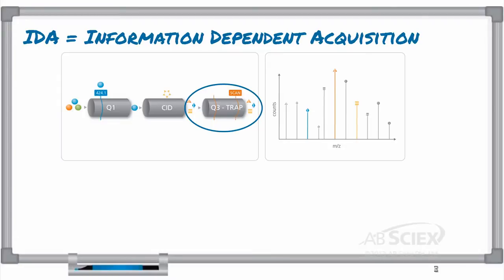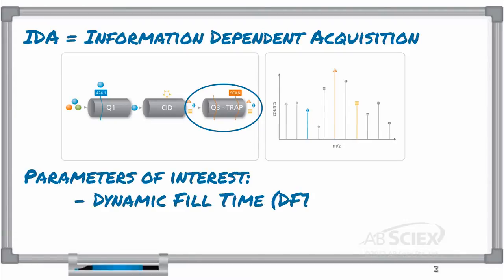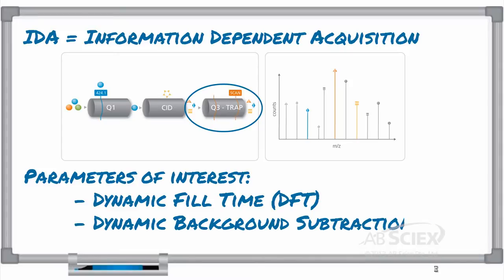During your EPI scan, you want to make sure the QTRAP data acquisition parameters are optimized to get the best possible data. The two parameters of most interest are dynamic fill time and dynamic background subtraction, or DBS.